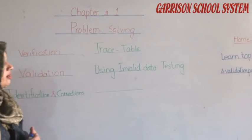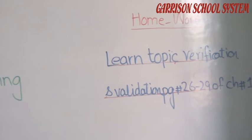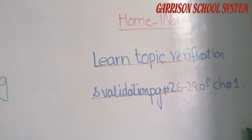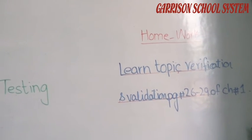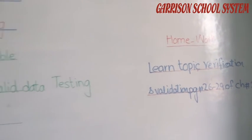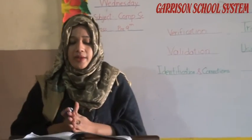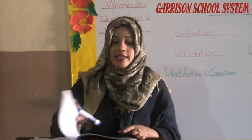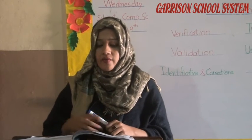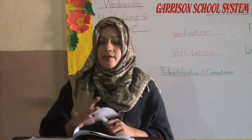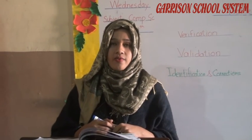Your homework is to learn the topic of verification and validation, pages 26 to 29 of chapter number 1. You have to learn verification and validation, identification and correction of errors, trace table, and using invalid data for testing — all topics completely.